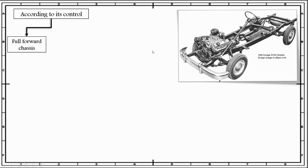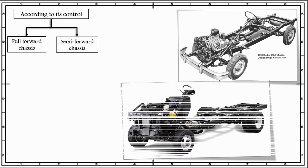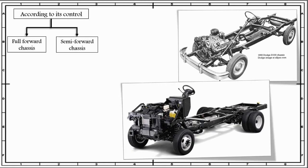Next, according to its control, chassis can also be classified as semi-forward chassis. In this type, the engine is fitted in such a way that half of it is placed in the driver compartment and half in front of the driver compartment. Hence, extra passengers or goods can be placed in that portion of the chassis. These chassis are used in standard Bedford pickups and Tata Mercedes trucks. An example is shown in this figure — a portion of the engine is fitted in the front whereas the other part is fitted in the driver compartment.